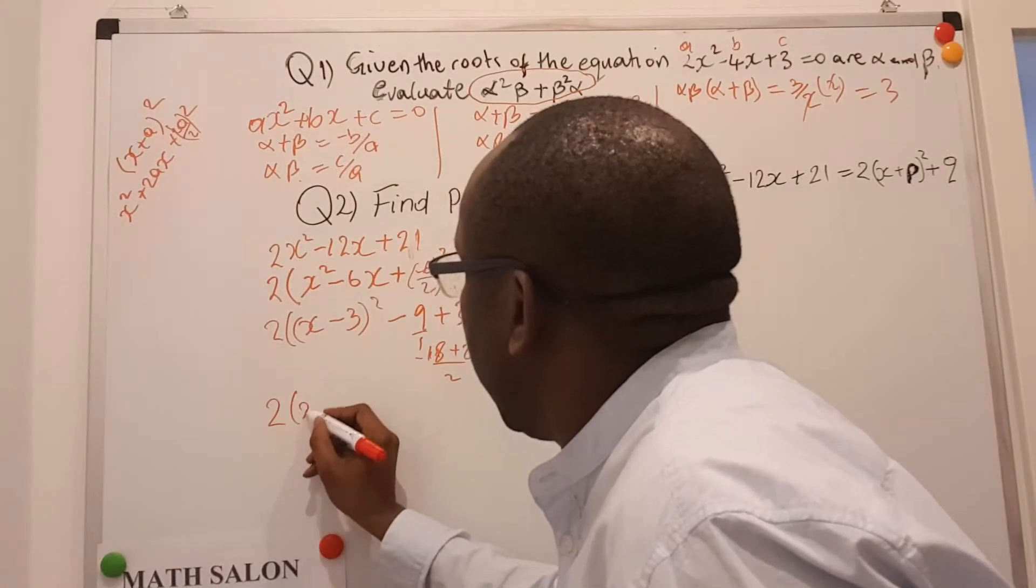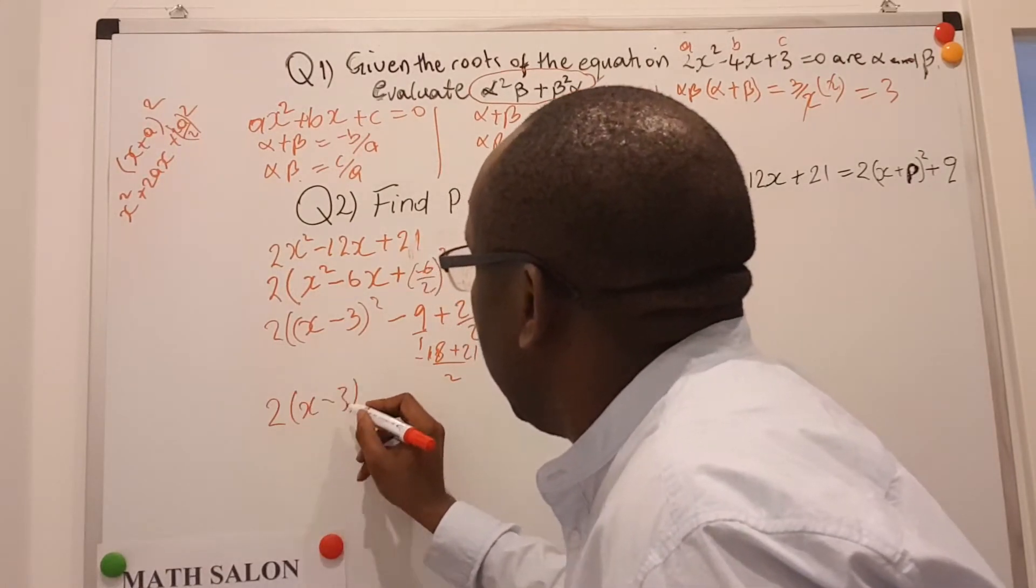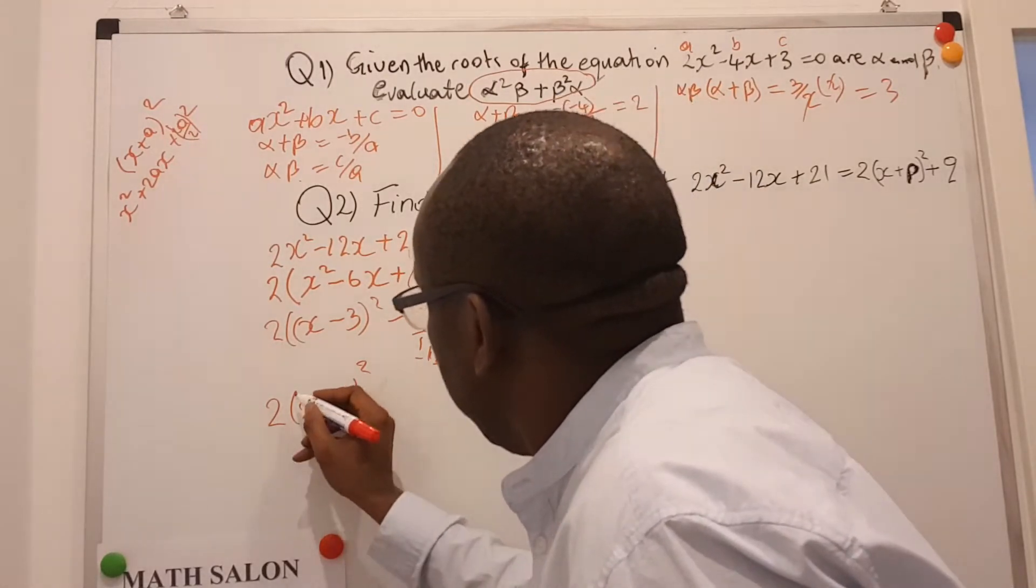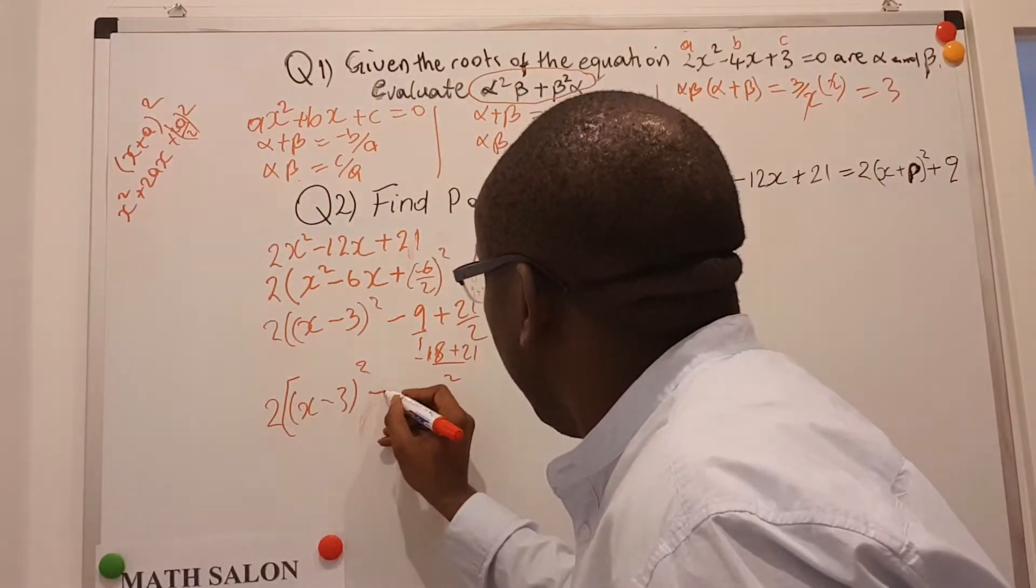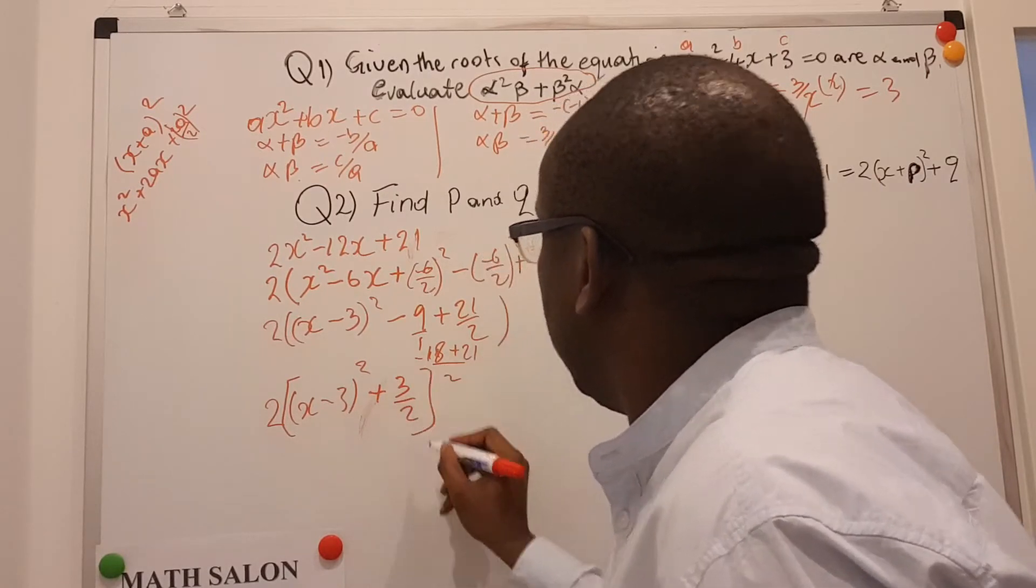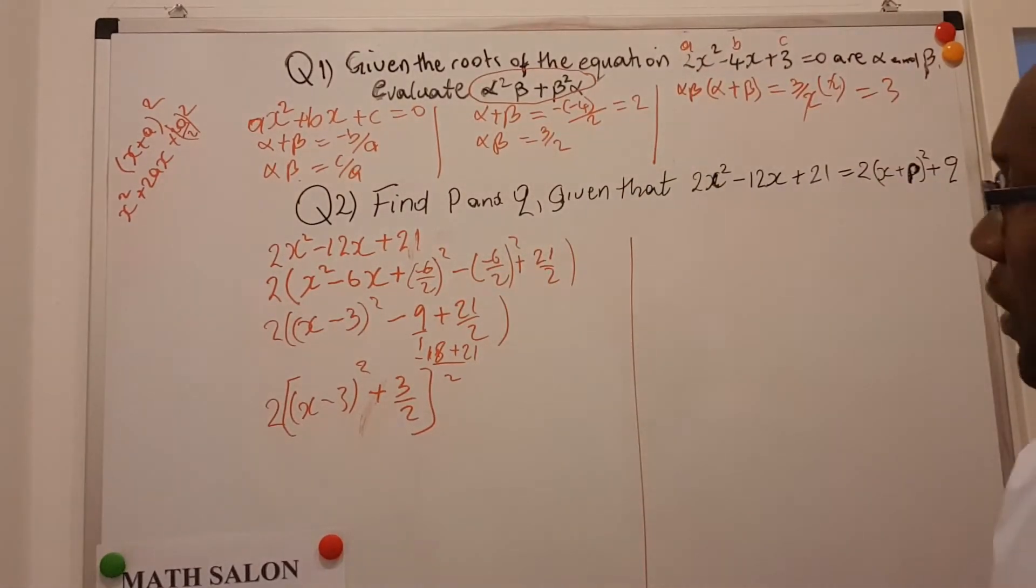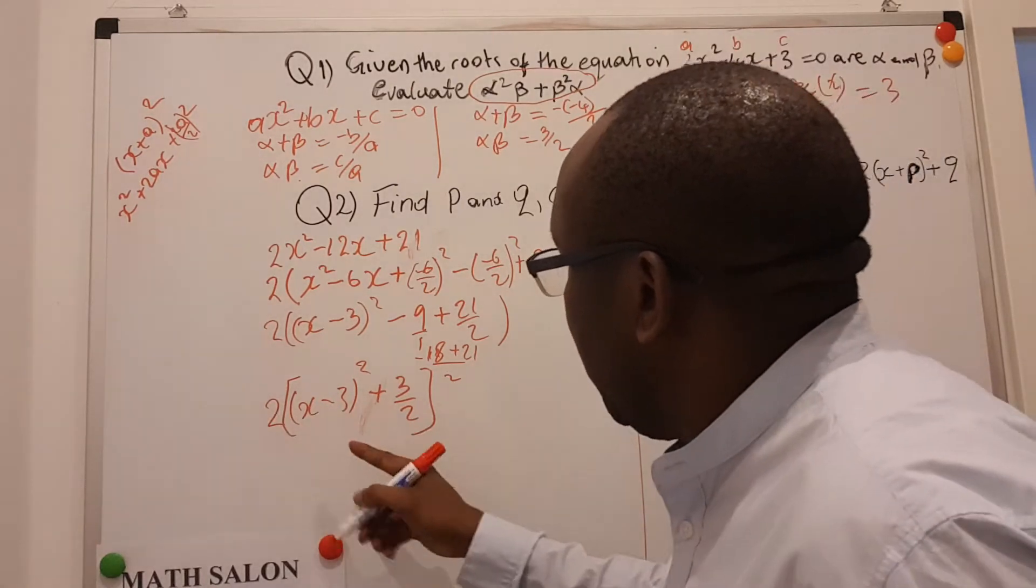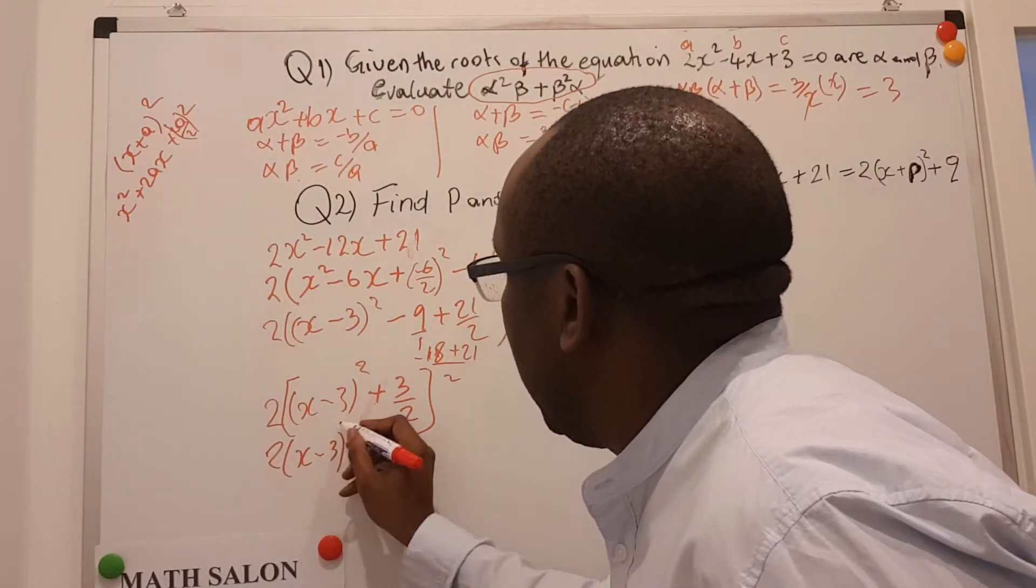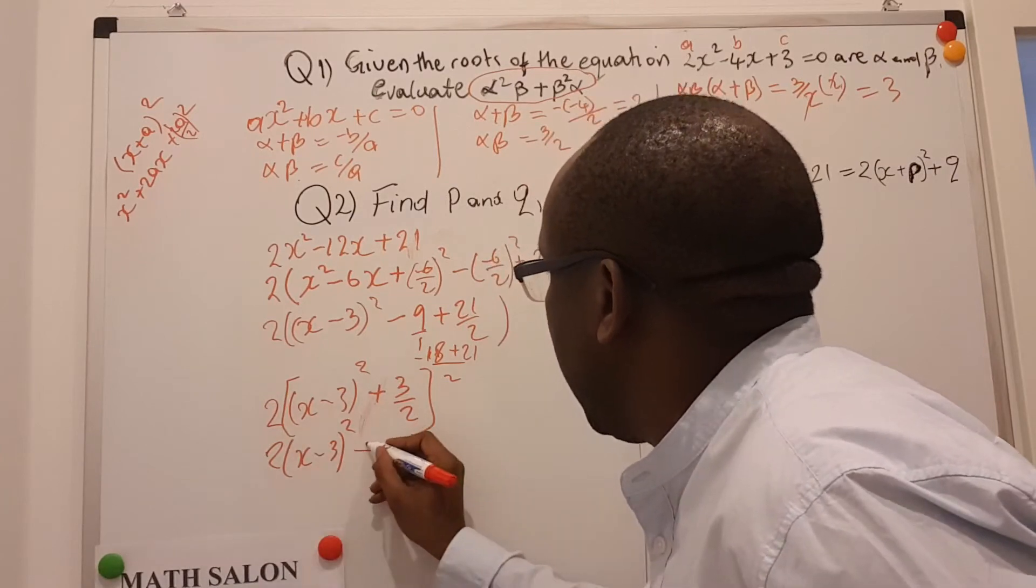So this is 2 into bracket x minus 3, all that squared, plus 3 on 2. If I open this 2, then I get 2 here times x minus 3, all that squared, the 2 cancel this 2, and I get plus 3.